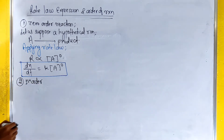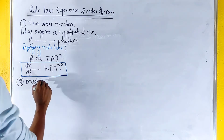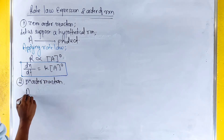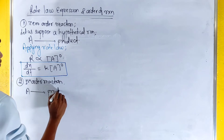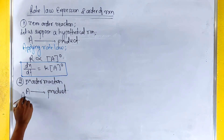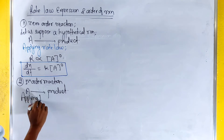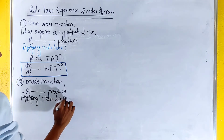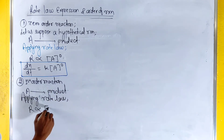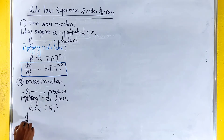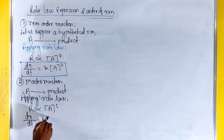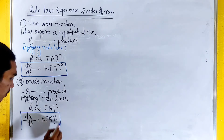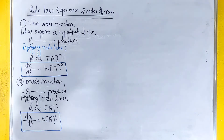First order reactions: let us suppose a hypothetical reaction where A gives product formation. Applying rate law, rate is directly proportional to A to the power 1. That is, dx/dt equals k times A to the power 1. This is the first order reaction.